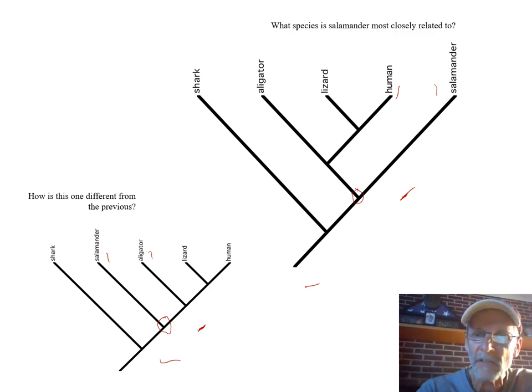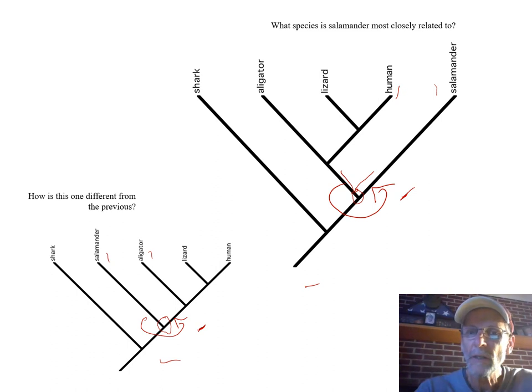It represents a common ancestor to whatever things diverge off of it. If you take this node and you just rotate it, that's exactly what's happened here, you don't change the meaning of this at all. That's why you have to be careful to not think that if their names are close to each other, that means they're closely related. It all has to do with where these nodes are, where the branch points are.